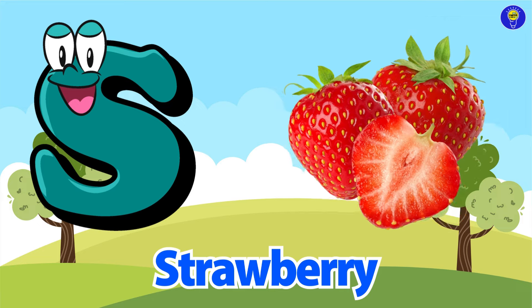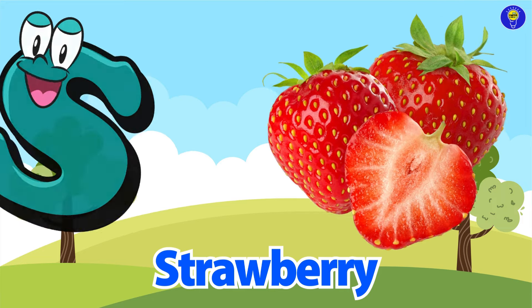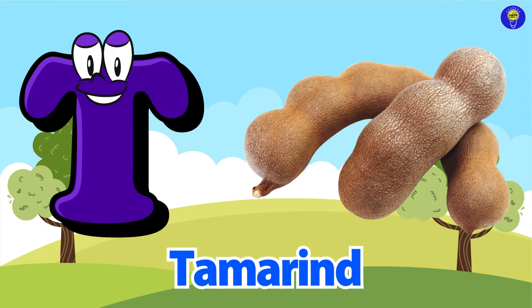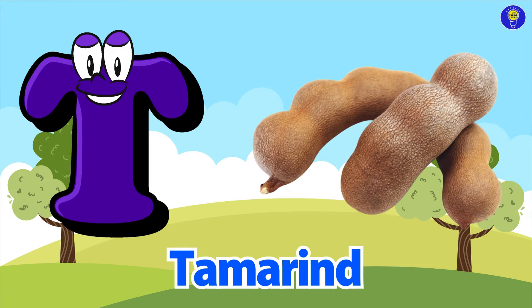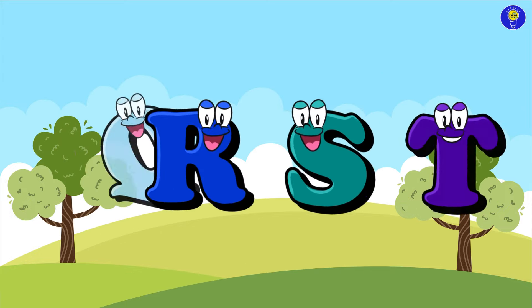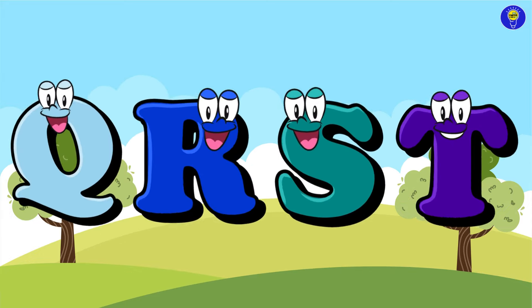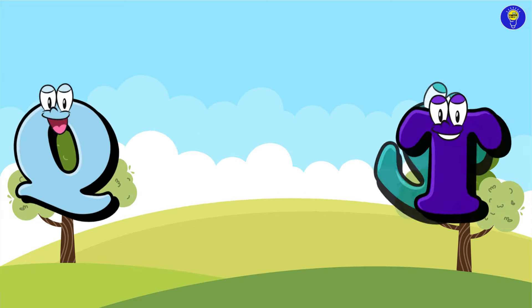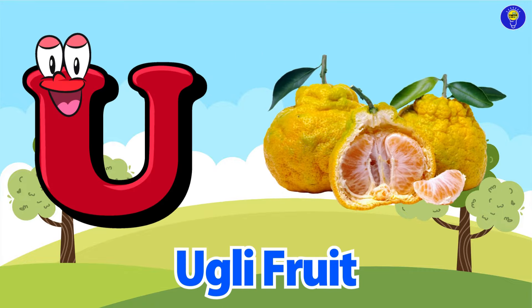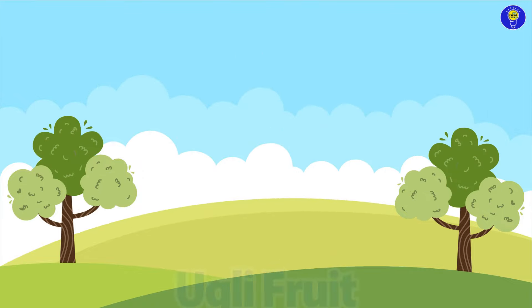S is for strawberry. Suh, strawberry. T is for tamarind. T, tamarind. U is for ugly fruit. Uh, ugly fruit.